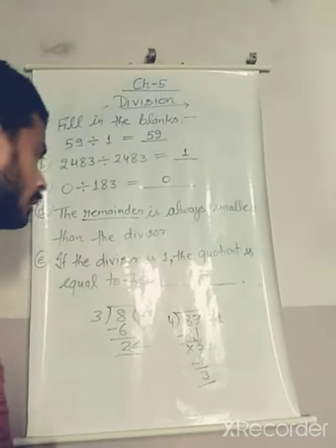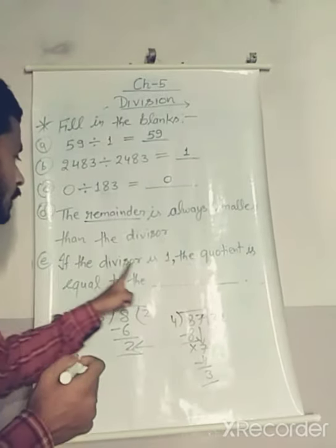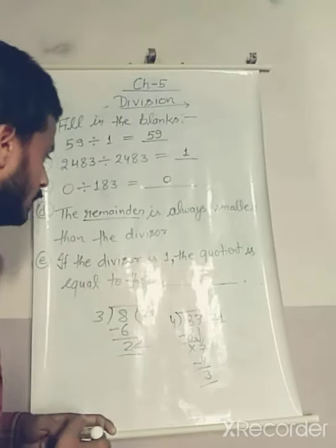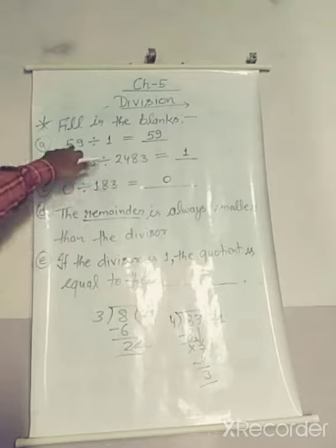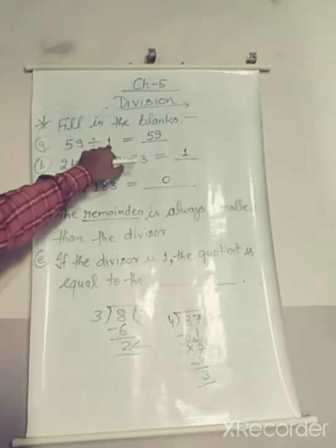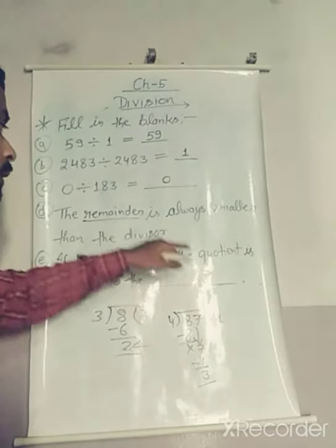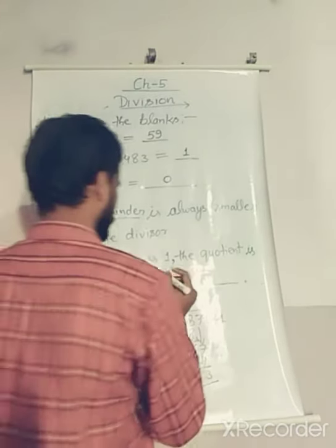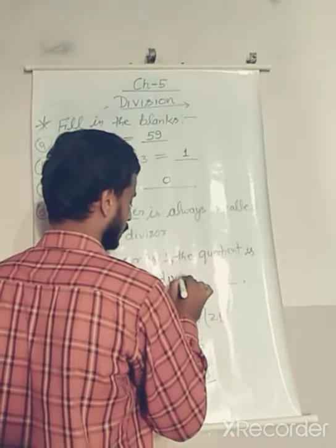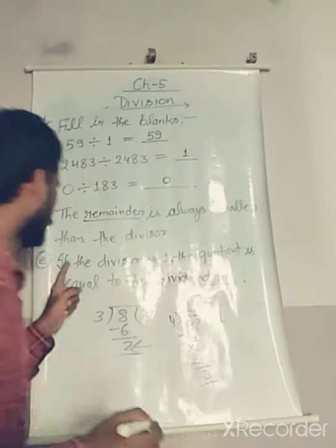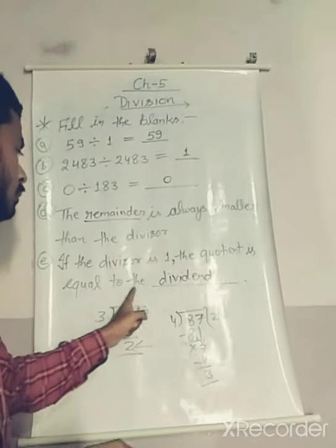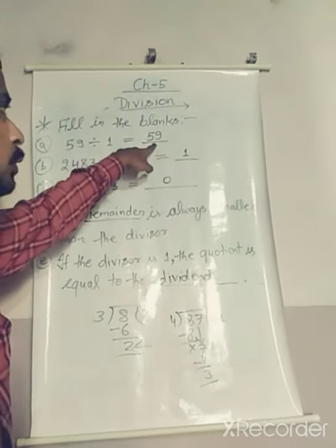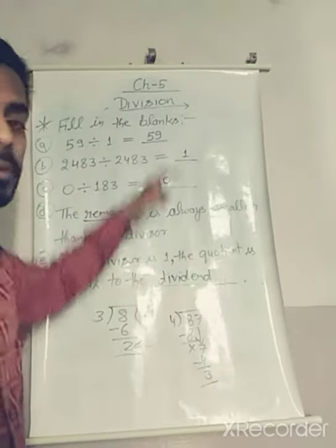Next property: if the divisor is 1, the quotient is equal to the dividend. For example, 59 divided by 1 — the quotient equals 59, which is the dividend. When we divide a number by 1, we get the same number as the quotient. So dividend equals quotient in this case.